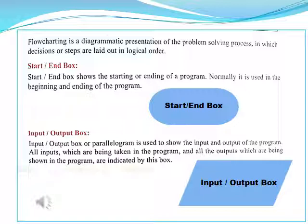Normally, when the program starts or ends, we use the oval box. It also shows the input and output box. The input and output box shows the quality and result of the program. The data that we want to process is our input and the result is our output. These are all shown using parallelogram boxes.